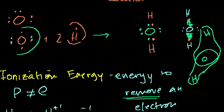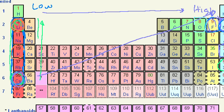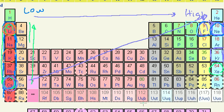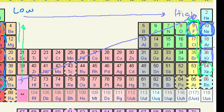Now, what's the trend of electronegativity on the periodic table? Which elements are likely to hog electrons? The ones that love electrons — the ones that are super close to completing their full eight valence electrons in their outermost shell. So the most electronegative atoms are going to be the halogens, especially fluorine, because small atoms want electrons even more since they'll get closer to the nucleus. The reason I'm not including noble gases is that they don't form covalent bonds — they're always happy, they're inert.